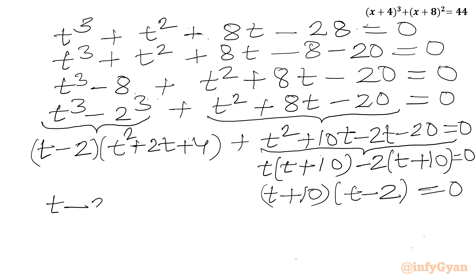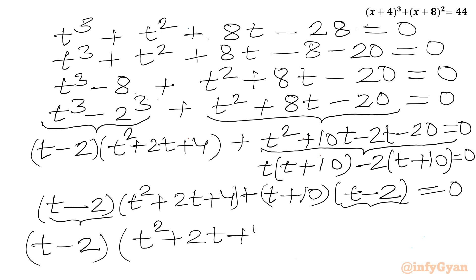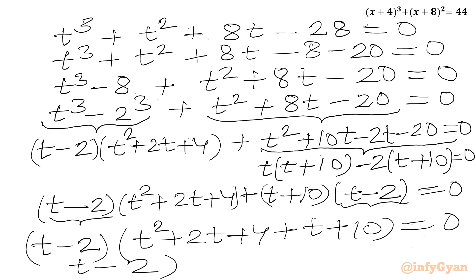We now have (t − 2)(t² + 2t + 4) + (t + 10)(t − 2) = 0. We take (t − 2) as common factor, so in the bracket it will be t² + 2t + 4 + t + 10, giving (t − 2)(t² + 3t + 14) = 0.